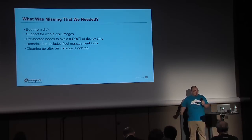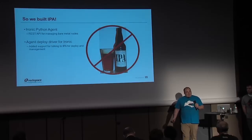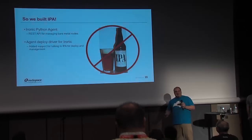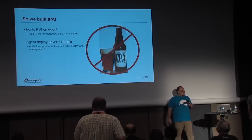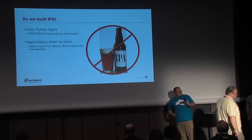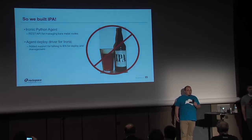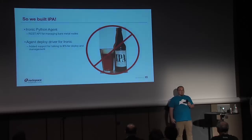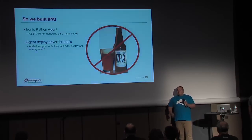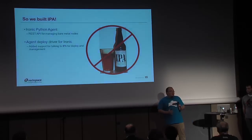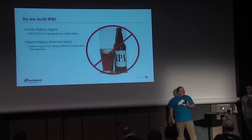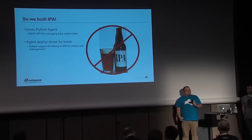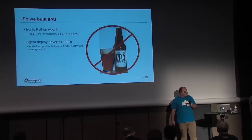So what did we do to solve these issues? We built IPA — and no, not the beer — the Ironic Python Agent. It's a REST API for managing bare metal nodes. We boot a RAM disk, that RAM disk does a lookup in Ironic to see what node it is, and then exposes a REST API that Ironic can call to do those in-band control actions. Along with the agent, we also created the agent deploy driver for Ironic, which tells Ironic how to communicate with the agent and use it to deploy.